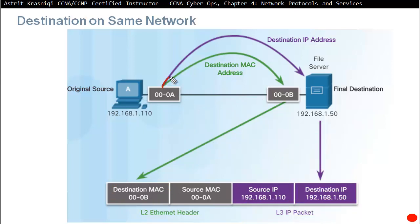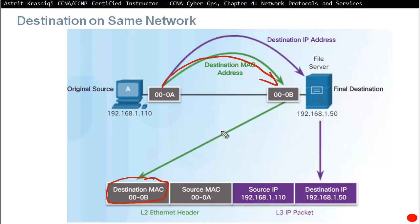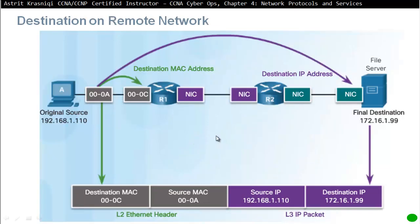When the packet goes to the destination, the first thing the destination does is check the destination MAC address. If it matches its own address, the frame is for itself. If it doesn't match, it discards it.